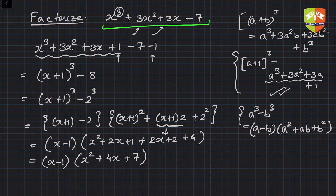Yep, so (x - 1)(x² + 4x + 7). I checked it also, it's absolutely correct. So what did we learn?